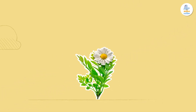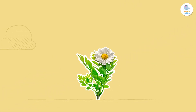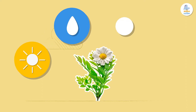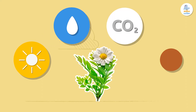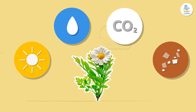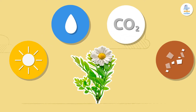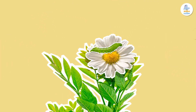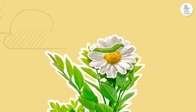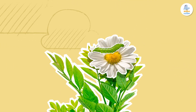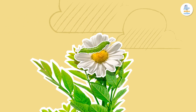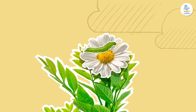Plants get the energy they need from the sun, water, carbon dioxide, and nutrients from the soil. A primary consumer, like a caterpillar, eats the plant's leaves. Yum, how tasty!